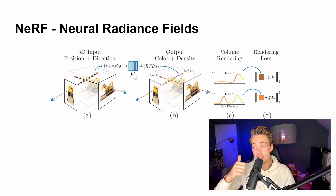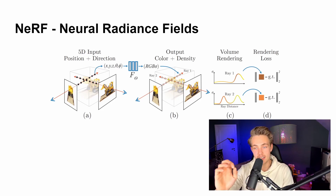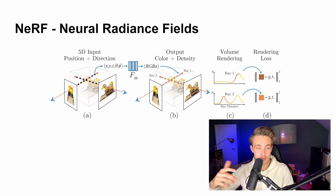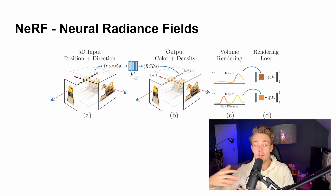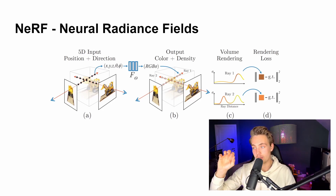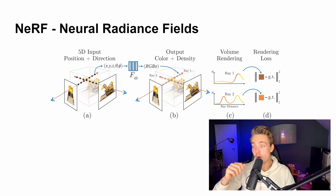The output from the neural network is an RGB color value — R, G, and B — plus a sigma value which represents volumetric density. Using this output we can perform volume rendering. For each point in the image, we project a ray throughout the scene. Since we don't have 3D information, we take steps along that ray and sample points from image to image across our entire input dataset. We throw all these inputs into the neural network and get the volume rendering output as a distribution following the density.